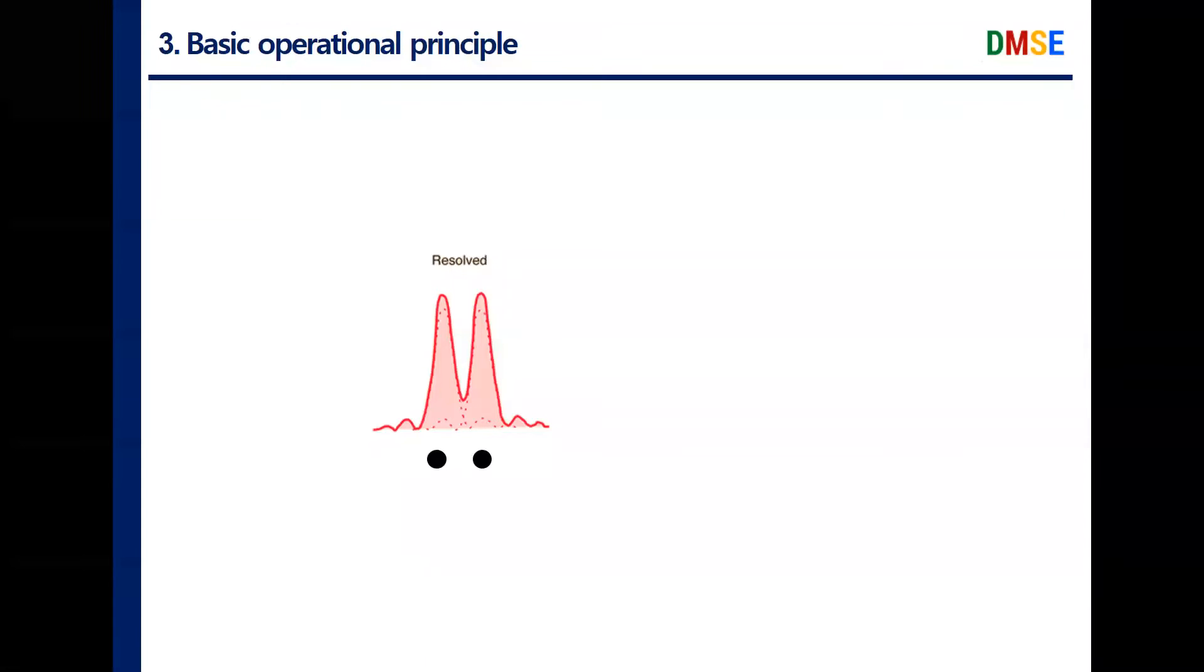Actually, resolution of optical microscopy is related to wavelengths of visible light. If the distance between two dots is far enough, we can resolve two dots. However, there is a criterion for the minimum distance between two dots we can resolve, named the Rayleigh criterion. And if the distance between two dots is less than the Rayleigh criterion, we cannot resolve two dots.